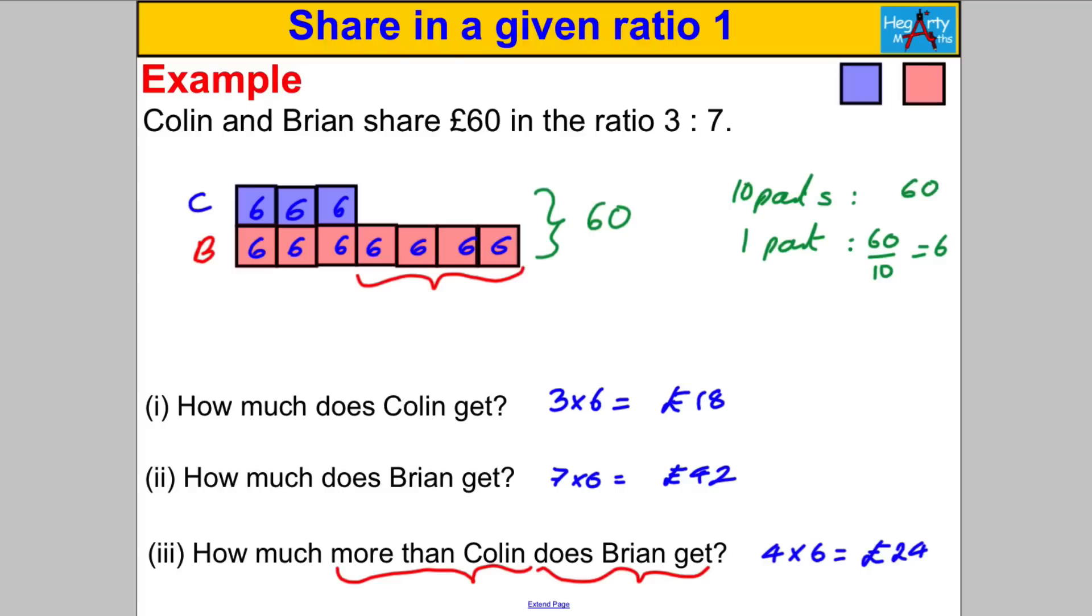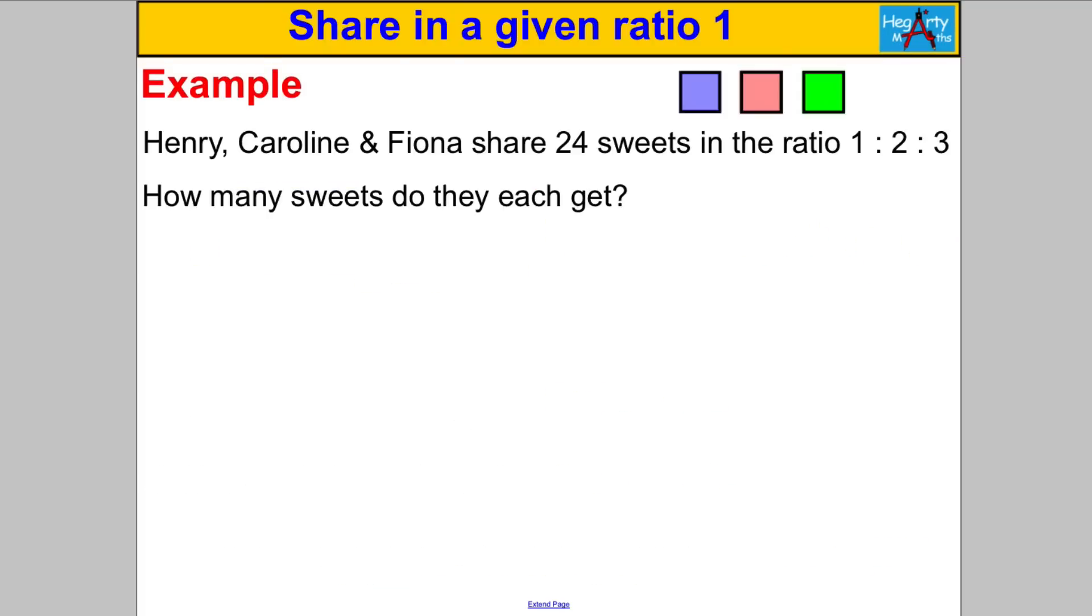Let's do another one. Do draw that picture. Pause the video, have a go. So Henry, Caroline, and Fiona share 24 sweets in the ratio 1 to 2 to 3. How many sweets do they each get? Let's draw that picture. This is Henry, this is Caroline, and this is Fiona. Now in total, all of that adds up to a total of 24 sweets. How many parts have you got? 1 add 2 is 3, add 3 is 6. So you can say that 6 parts must be worth 24 sweets. So one part, you must divide by 6, and 24 divided by 6 is 4.